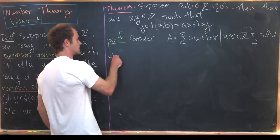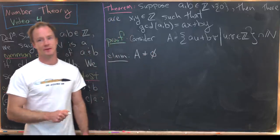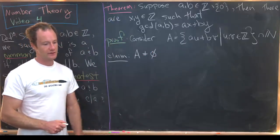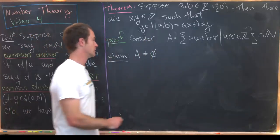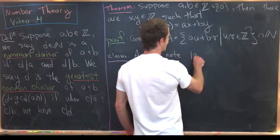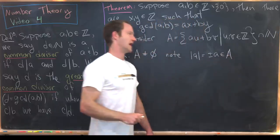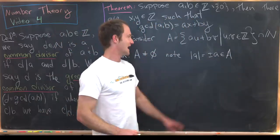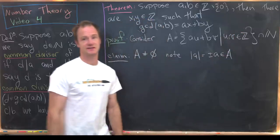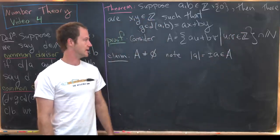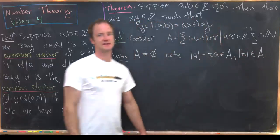My first little claim is that the set A is not equal to the empty set. Since a and b are both non-zero, notice that the absolute value of a equals plus or minus a, which is an element from A. If a is negative, we take negative a, which makes it positive and thus a natural number. Similarly, the absolute value of b is also in the set A.